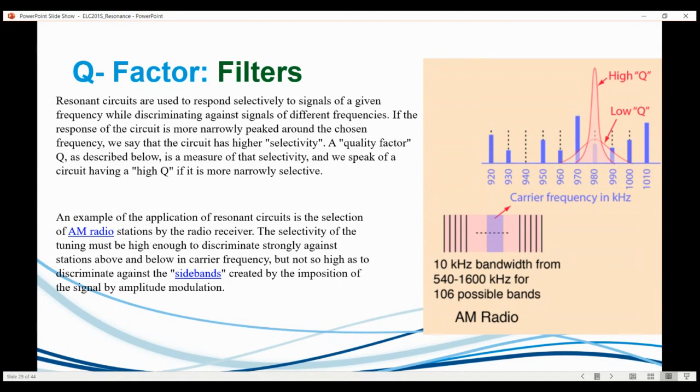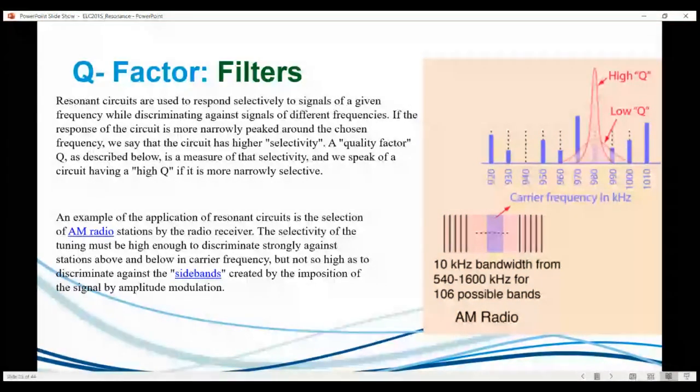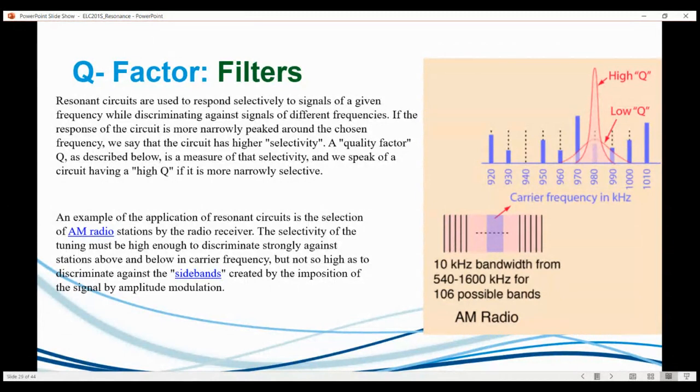A quality factor Q is a measure of selectivity as well and the efficiency, like I mentioned. We speak of a circuit at high Q, it is more narrowly selective. They give an example saying an example of the application of resonant circuits in selection of AM radio stations by the radio receiver. The selectivity of the tuning must be high enough to discriminate against stations above and below, but not so high as to discriminate against the sideband created by the imposition of signal by amplitude modulation.